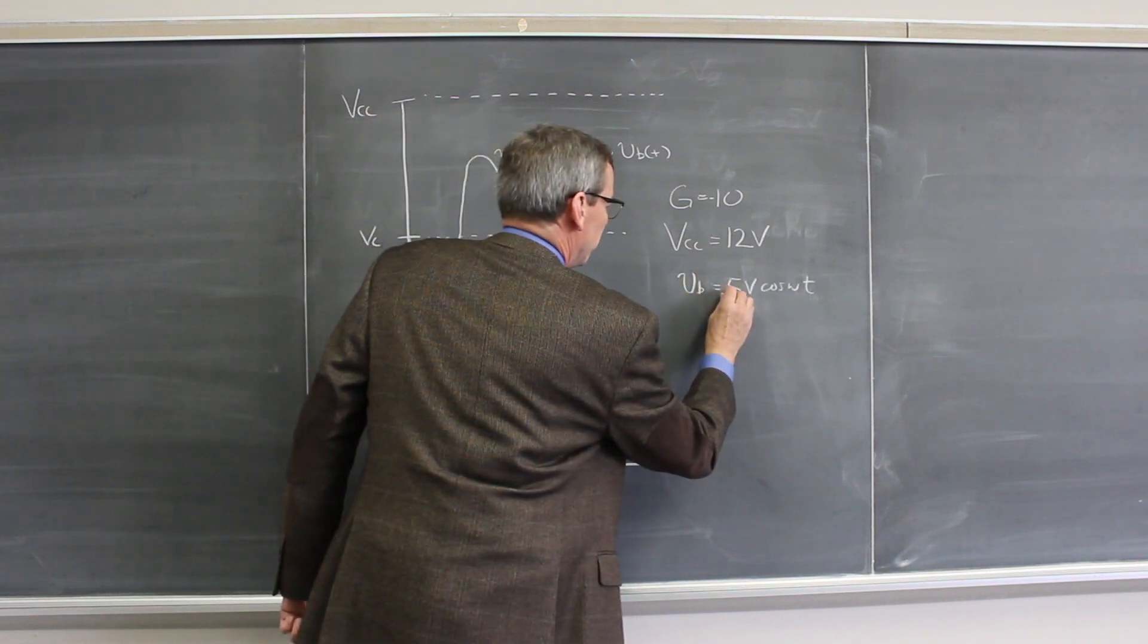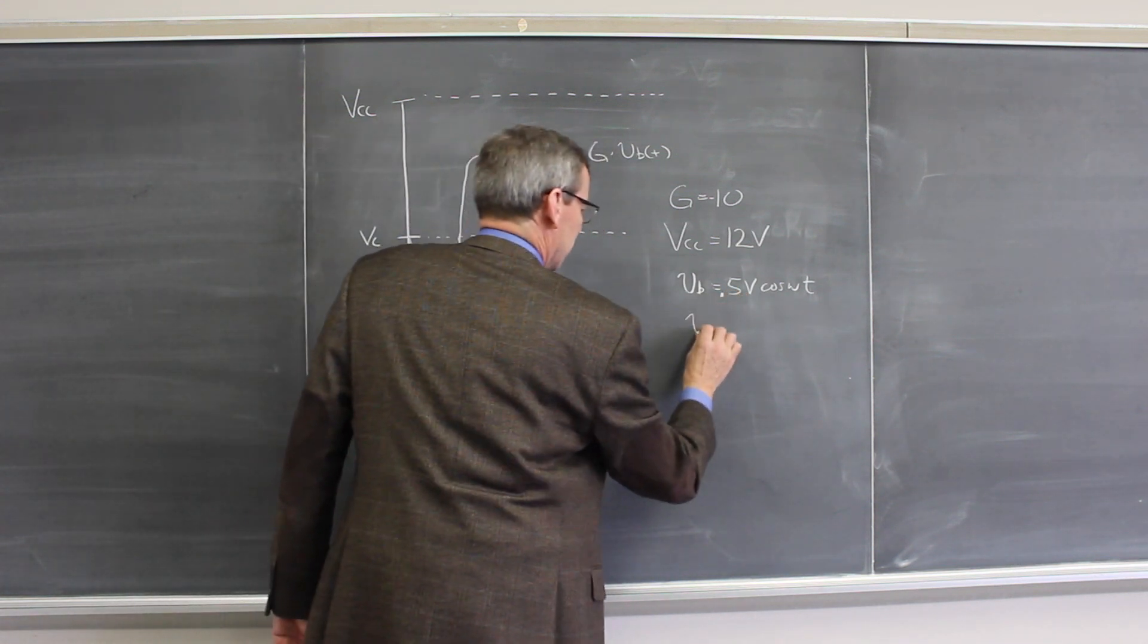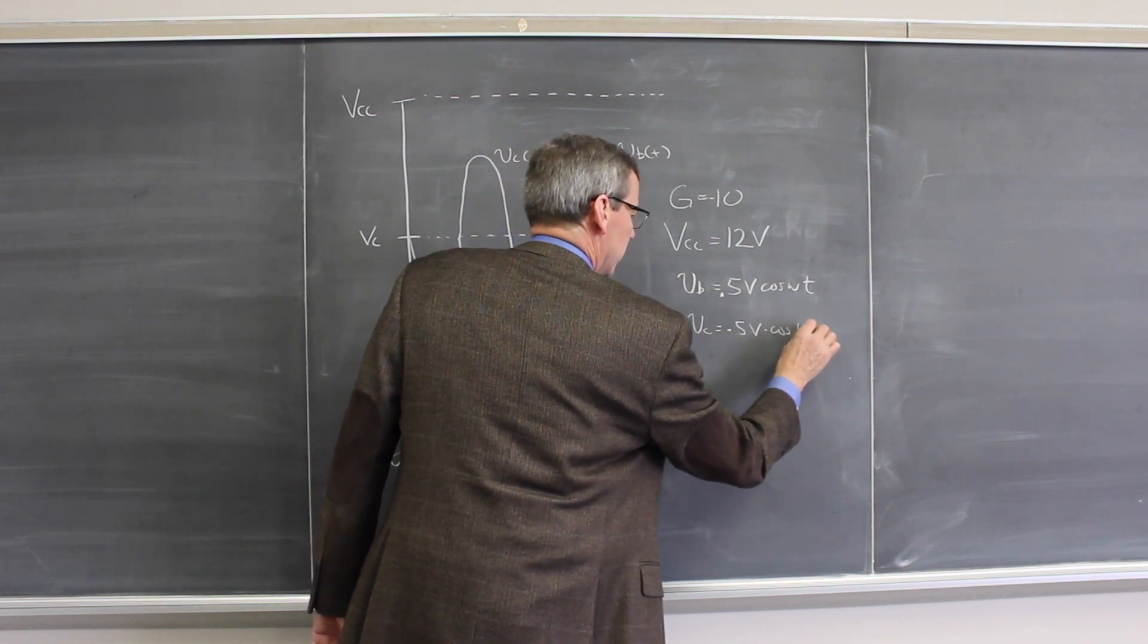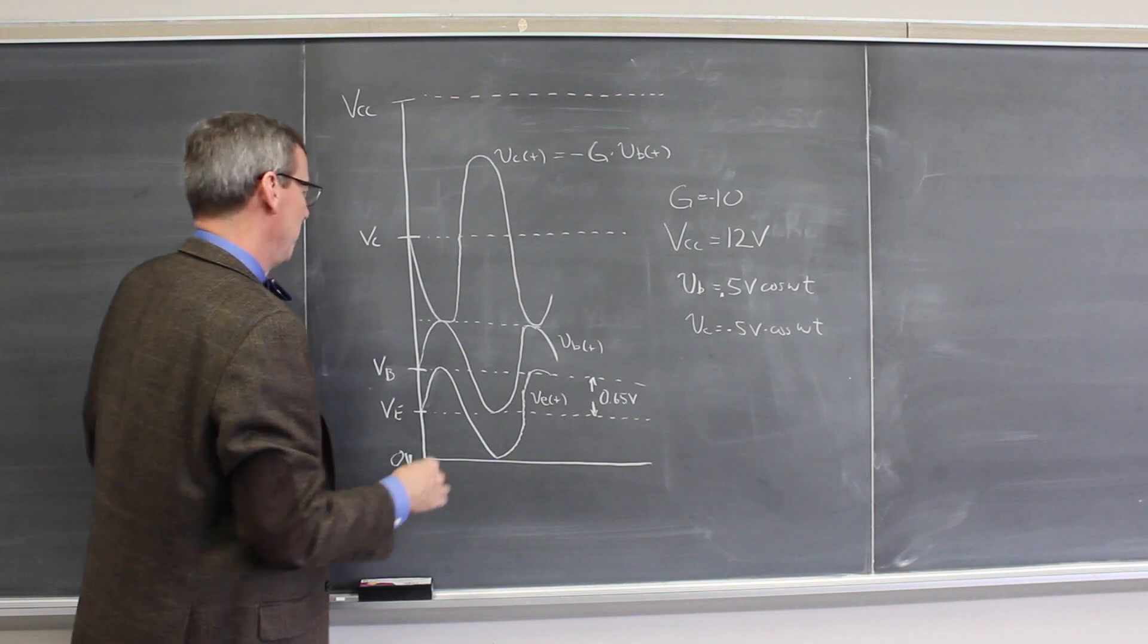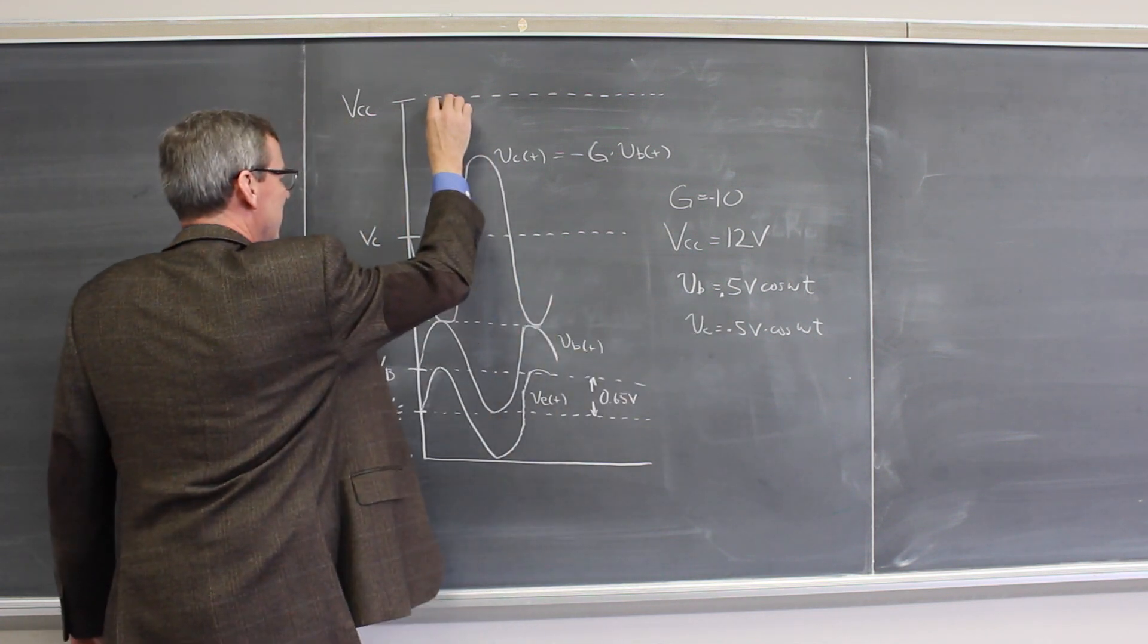Then we would expect the collector voltage to be minus five volts times the cosine of omega t. So we would like this here to be five volts, so we'd like that to be 10 volts.